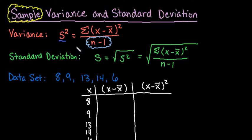Make sure you remember, if you are dealing with a population, you divide by the entire population size. In sample variance and standard deviation, you always divide by n minus 1.